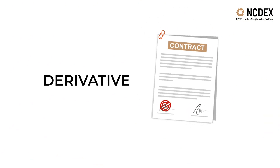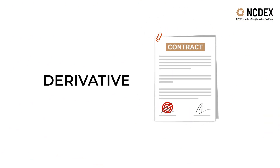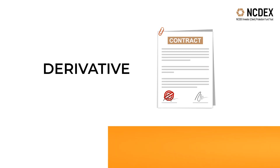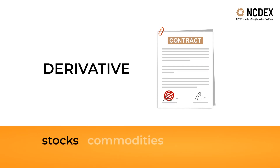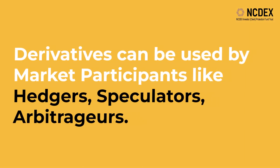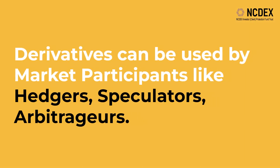A derivative is a contract between two parties whose value is based on an underlying asset. The most common underlying assets for derivatives are stocks, commodities, bonds, interest rates, currencies, and indices.